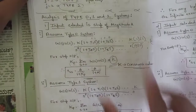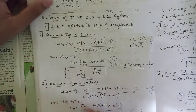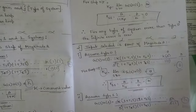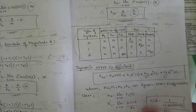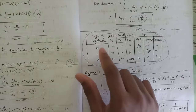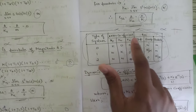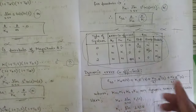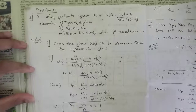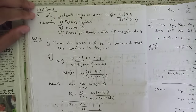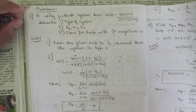We analyzed type zero, type one, and type two systems for different kinds of inputs — step, ramp, and parabolic. The table shows the values of Kp, Kv, Ka and the steady state error for each system type. Problems related to these systems and formulas for finding steady state errors have also been discussed.